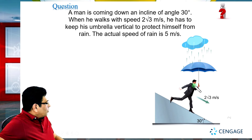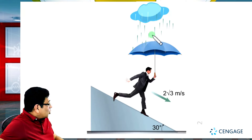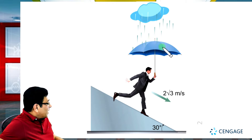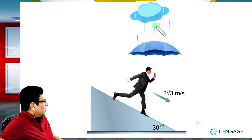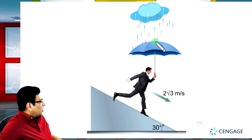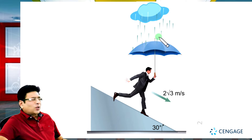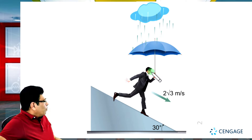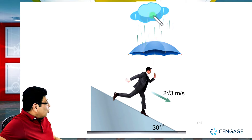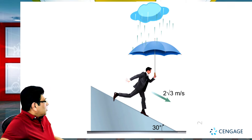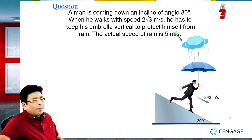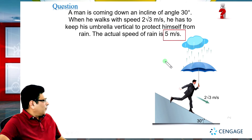We can observe here that the apparent direction of the rain — that means the direction of the rain as seen by this man — is vertical. This is the apparent direction of the rain; it is not the actual direction. The man perceives it in the vertical direction. The actual speed of the rain is 5 meters per second.